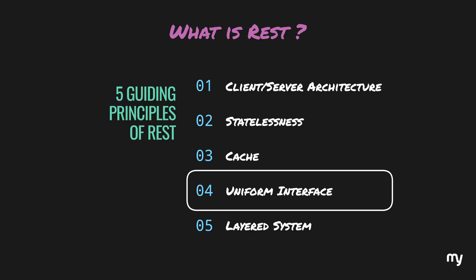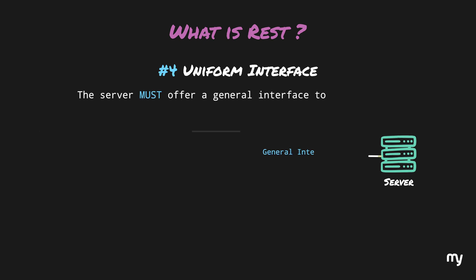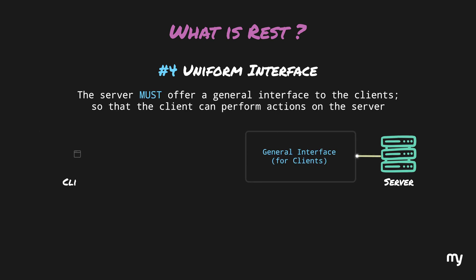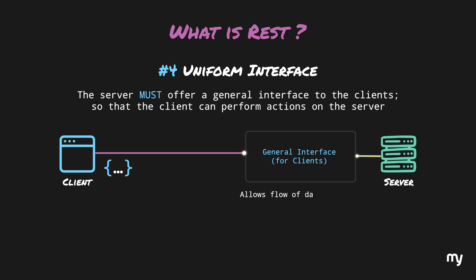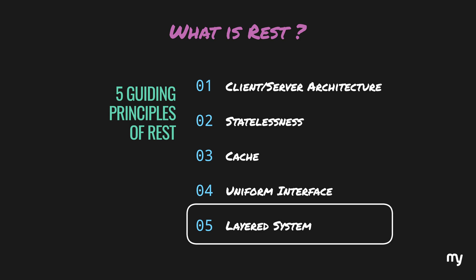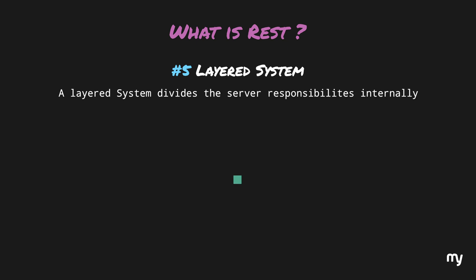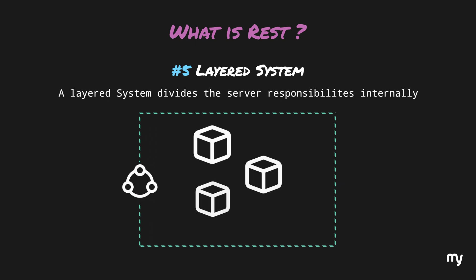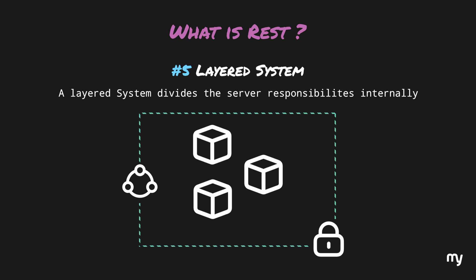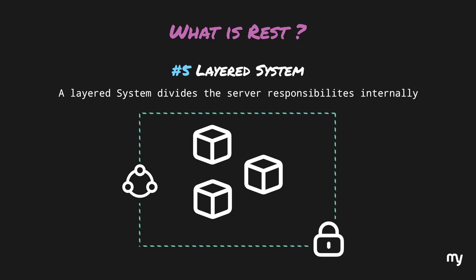The fourth principle is uniform interface. The server must offer a general interface using which clients can request to perform actions on the server, allowing the flow of data through requests and responses in a standard way. The fifth principle is layered system. This is about how a server is organized internally — a layered system divides server responsibilities like load balancing, security, and actual functionality. In today's world, microservices architecture would be a great example of a layered system.